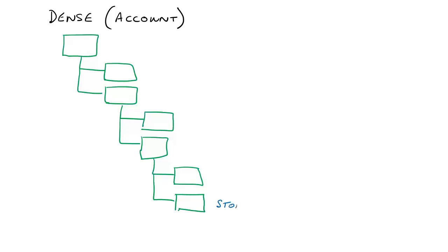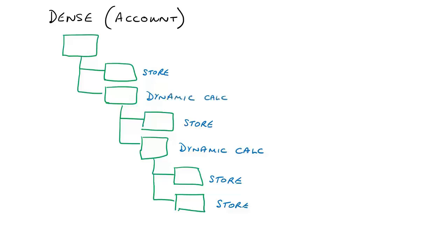Stored members, as the name suggests, store data in the database and are base level or level 0 members where data is input. Parent level members of dense dimensions are dynamically calculated, which means that aggregation in the account dimension occurs automatically as upper level members are retrieved. Whilst further members can be added under dynamic calc members, they cannot be added under stored members.